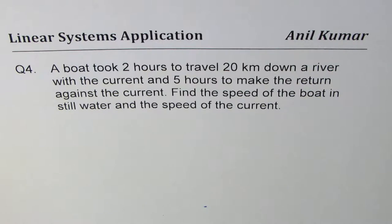A boat took 2 hours to travel 20 km down a river with the current and 5 hours to make the return against the current. Find the speed of boat in still water and the speed of the current.